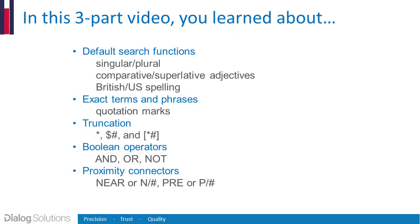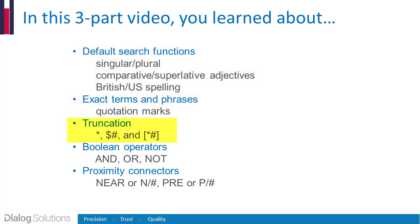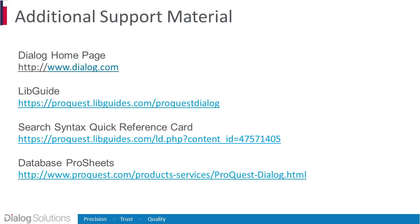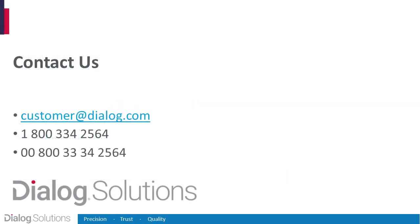So that's it. In this video, you've learned about each of the default search functions, how to search for exact terms and phrases, how to search using truncation, and how to combine terms using either the Boolean operators or the proximity connectors NEAR and PRE. I hope you found this helpful. If you'd like more information, here are some links to additional resources. If you have any questions or need some help, feel free to call us at these numbers, or you can email the help desk at customer@dialog.com. Thanks for using Dialog, and enjoy the rest of your day.